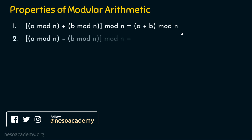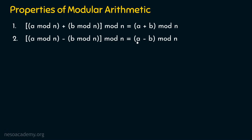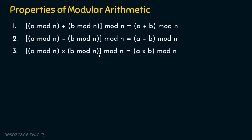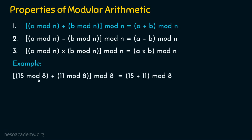The second property is: (a mod n − b mod n) mod n = (a − b) mod n. So a big equation simplifies to simply a minus b mod n. The third property is the product: (a mod n × b mod n) mod n = (a × b) mod n. Now let's see examples for all three. For the first one, take a = 15 and n = 8. So: (15 mod 8 + 11 mod 8) mod 8 = (15 + 11) mod 8 = 26 mod 8. 8 goes into 26 three times (24), remainder is 2.